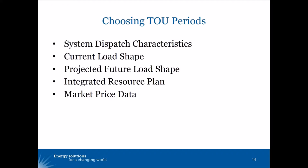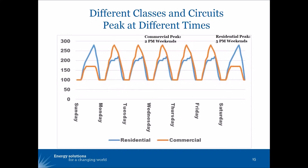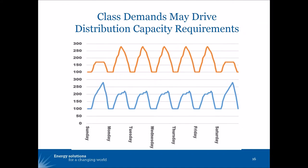But the peak periods are not always going to be the same for different classes. This illustrative example shows a blue line through the week of a residential load and an orange line of a commercial load. The commercial load is peaking Monday through Friday at 2 p.m. The residential load is peaking on weekends at 5 p.m. They're not peaking at the same time.